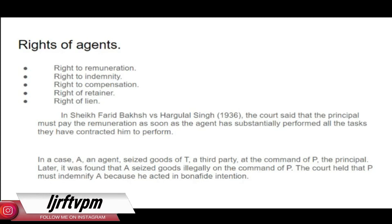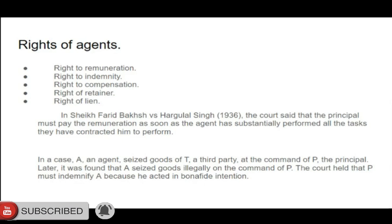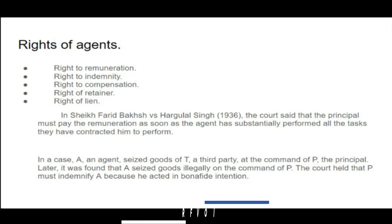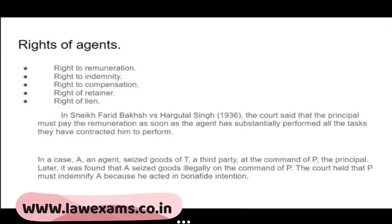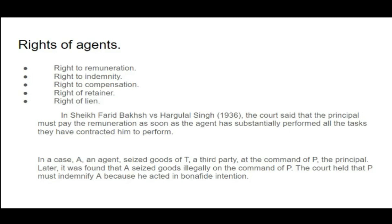Section 221 deals with agent's lien on the principal's property — another right. We already saw two or three rights. The right of lien is available to the agent. Sections 217 and 219 also give a kind of lien — Section 217 says the right to retain out of sums received, and Section 219 says an agent may retain money received. These are all a kind of lien — a kind of power to hold properties.